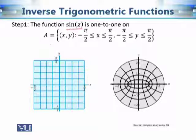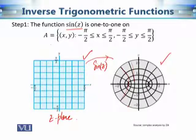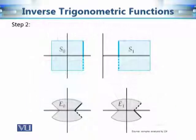For the function sine z, we choose a region in the z-plane such that the function is 1-to-1 in that region. From our discussion of sine z, we have seen that the image of this square region under sine z is going to be this elliptical region. We discussed in detail that the images of these lines are going to be these lines in the elliptical region. That is step number 1: find a region in which the function is 1-to-1 and find its image.